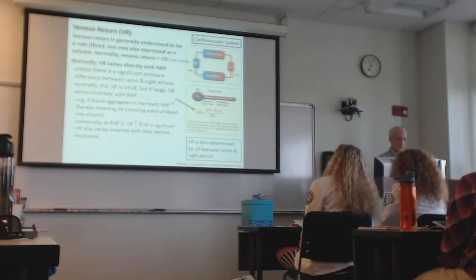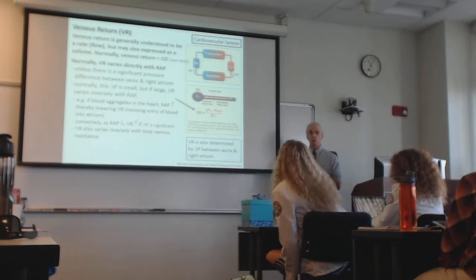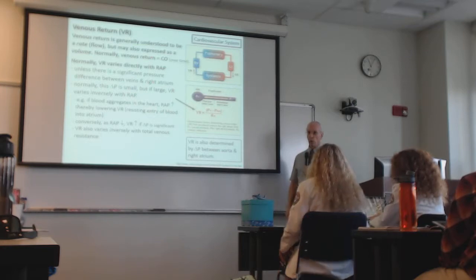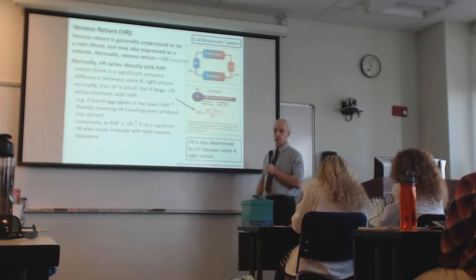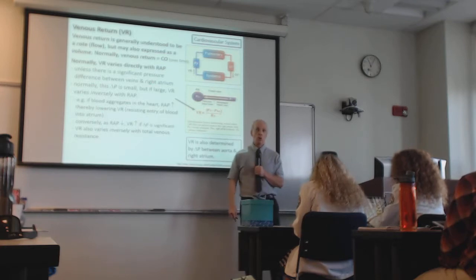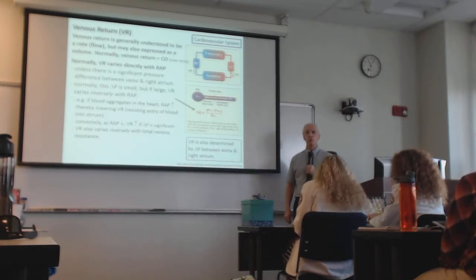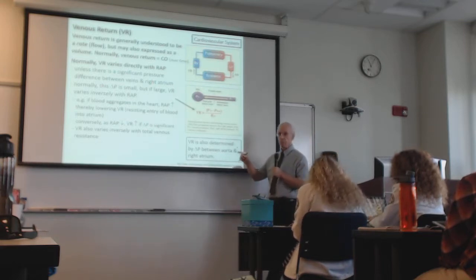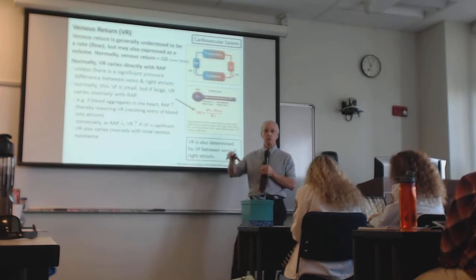First on our list is venous return. We talked about right atrial pressure, so it's important to differentiate return and pressure. Return is a volume — whether you understand volume as milliliters, liters, or as a flow meaning amount over time — but be sure you're able to differentiate pressure from volume.